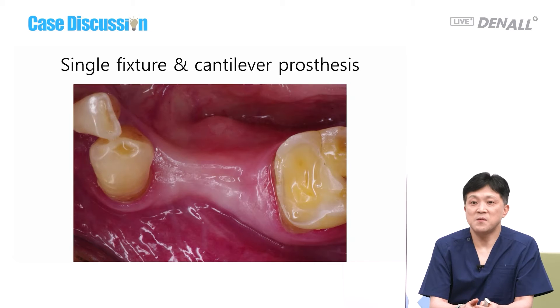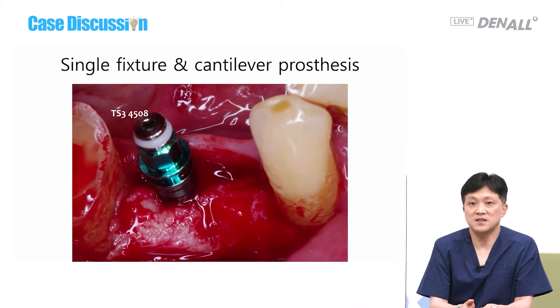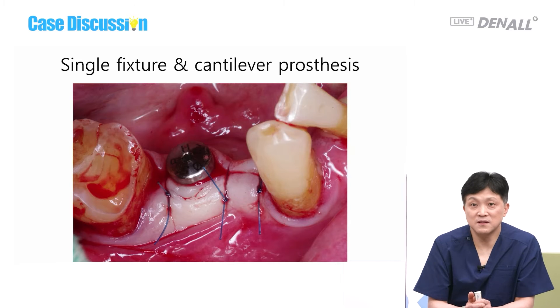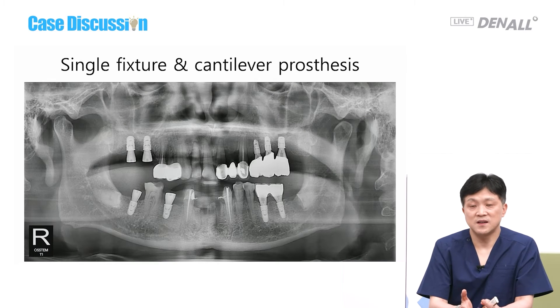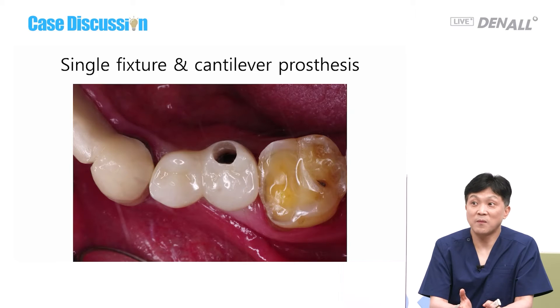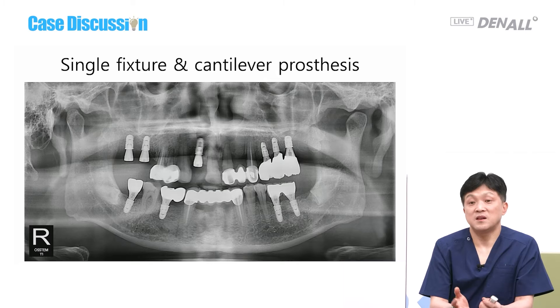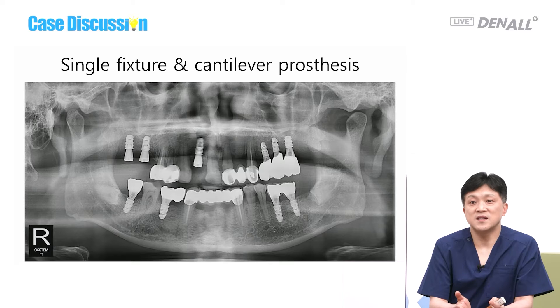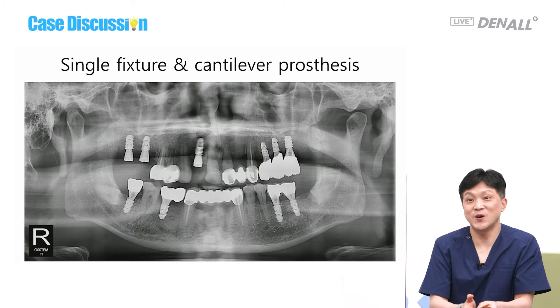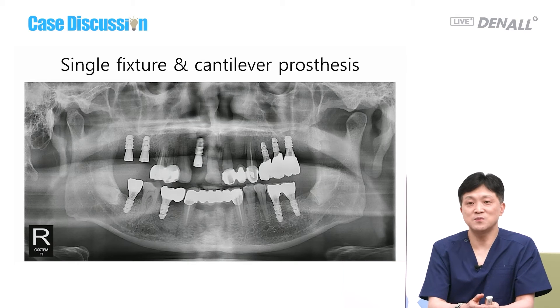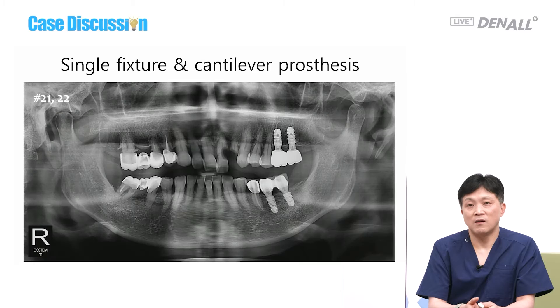A mesial cantilever is needed here, so the fixture is installed at 45, size 4.5 by 8 mm — very simply placed. The prosthesis is delivered after waiting. This is a common approach when you are not very experienced and are worried; it is the most stable option available. The prosthesis is finished, and I have continued placing implants — number 12 and upper posterior prosthesis still need to be delivered.